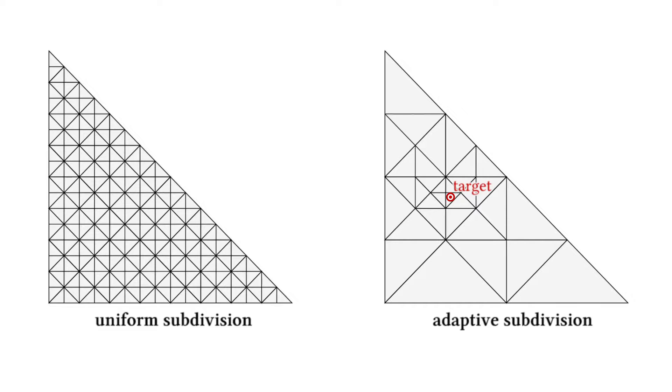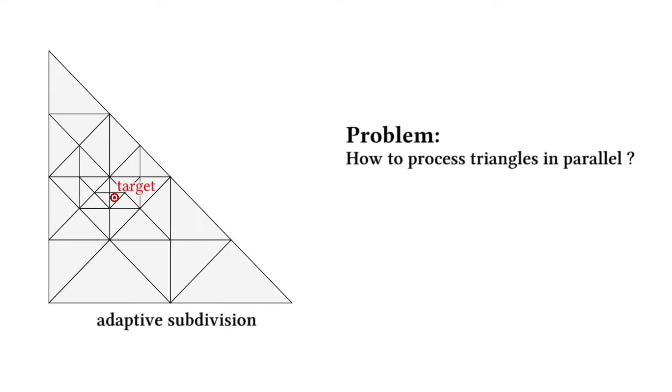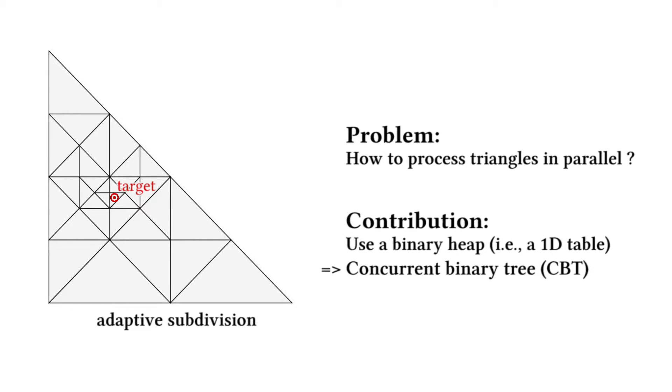In this work, we are interested in computing such subdivisions in parallel. To this end, we introduce a compact binary heap data structure that makes such computations practical. We refer to this data structure as a concurrent binary tree.